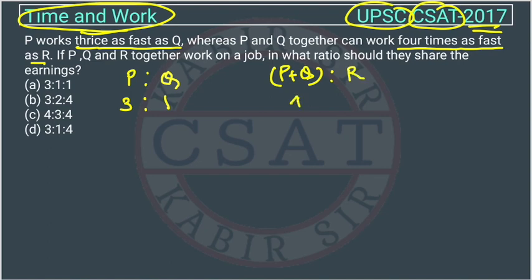P and Q together work four times as fast as R. If P and Q together work on a job, in what ratio should they share the earning? They will share their earning on the basis of their efficiency — whoever works more will get more share. So there is no need to use the time and work concept here.